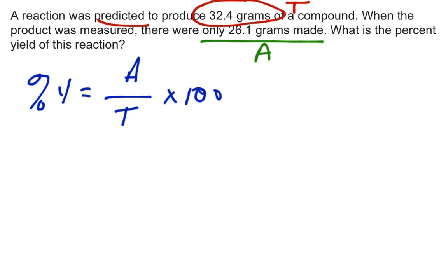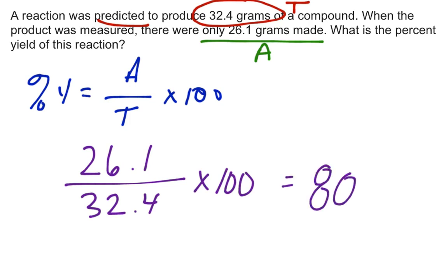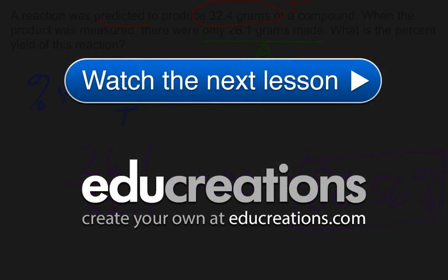Actual, 26.1 divided by theoretical, 32.4 times 100. Our answer comes out to 80.56% yield. And that is how you solve percent yield problems. So, now we're going to test it.